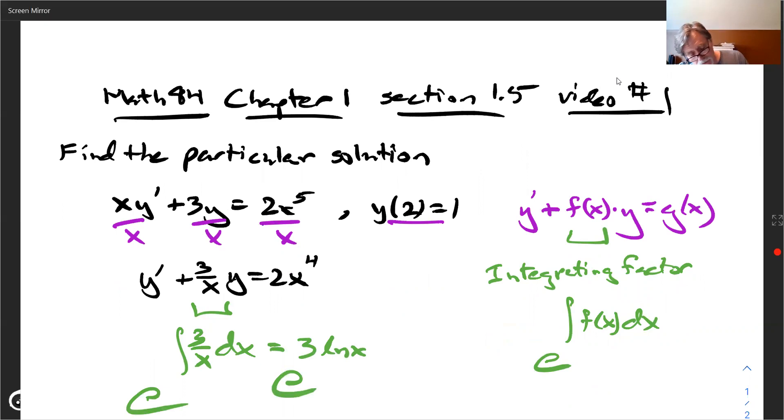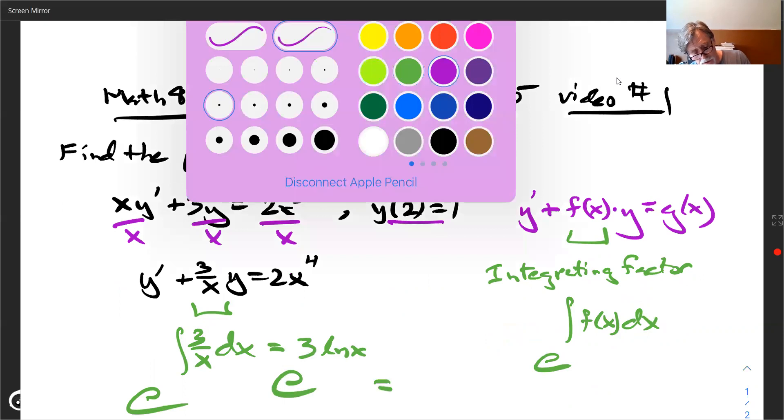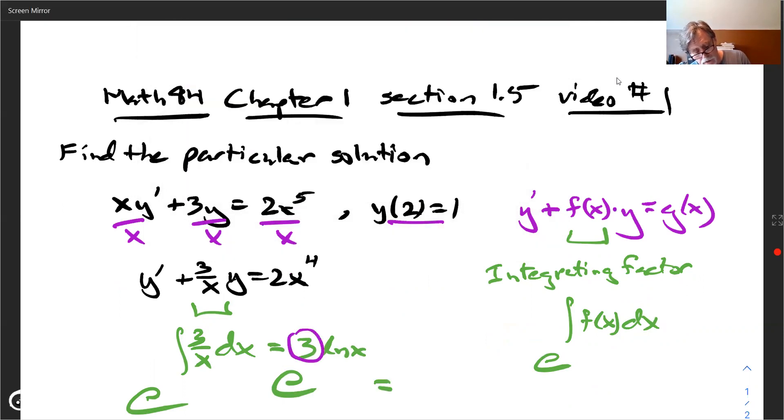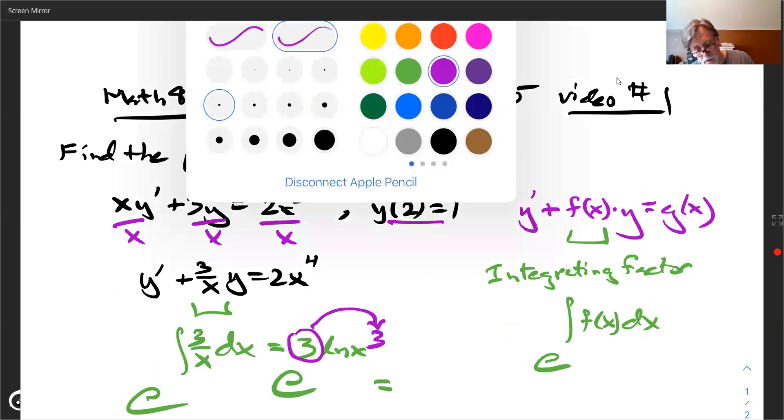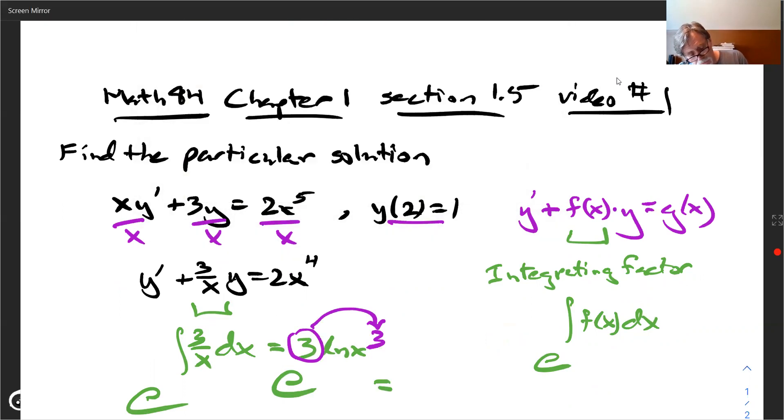But what we do is we apply e to that. And what's cool about this one is this, I'll do this in this color, this 3, you're going to want to bring in, in these types of problems where it's the natural log, you're going to want to pull that in as a power because what happens next is what? Well, we've got e to the natural log of x cubed and e and ln cancel. And our integrating factor is x cubed only.